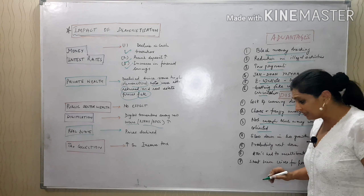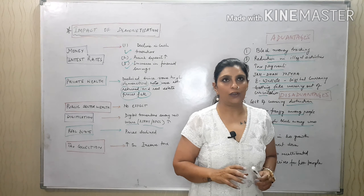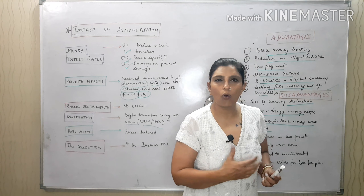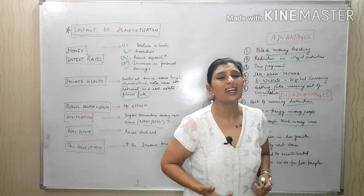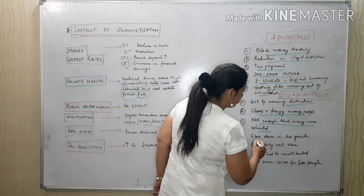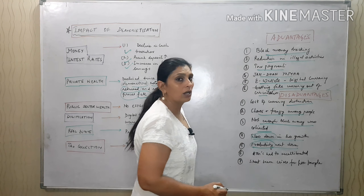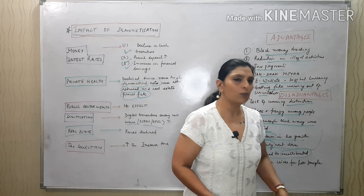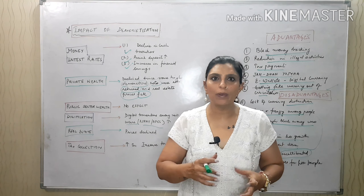Not enough black money was extracted. The intention was to curb black money, but in reality much black money remains with people. Some converted it into gold, and buying gold was also brought under regulation. Many initiatives were taken but complete extraction of black money was not achieved. The economy slowed down because production stopped, and there was a short-term crisis for poor people despite Jan Dhan Yojana.